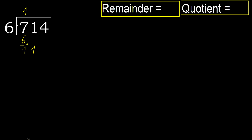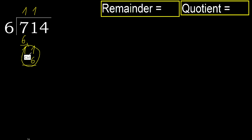6 multiplied by 2 is 12, which is greater. Multiplied by 1 gives 6, which is not greater. Subtract. Next.